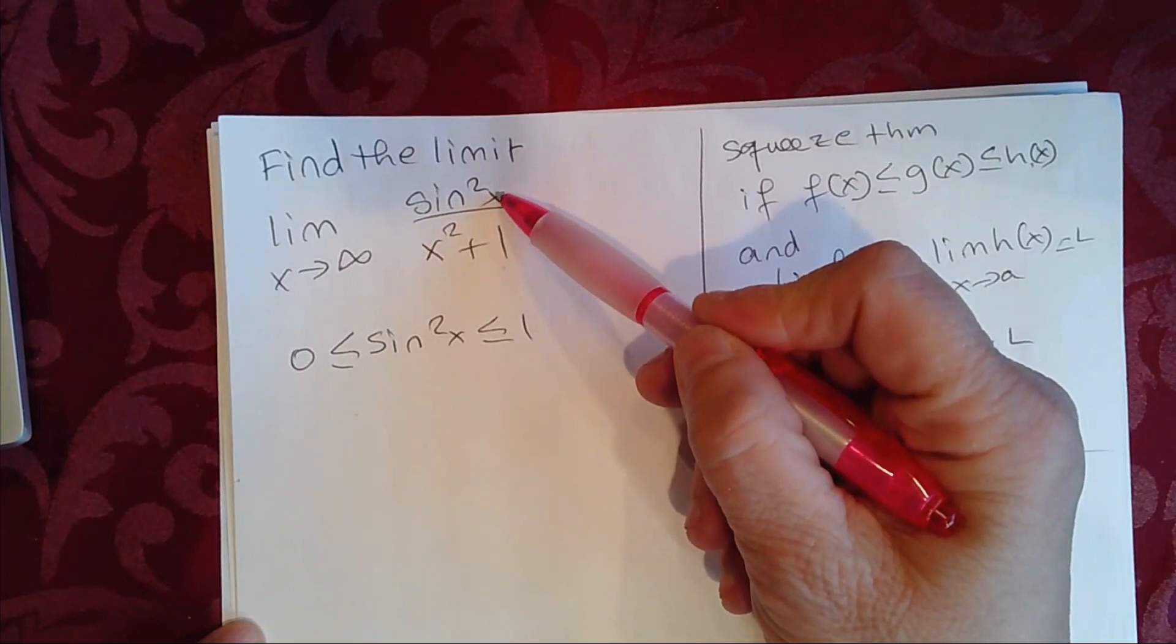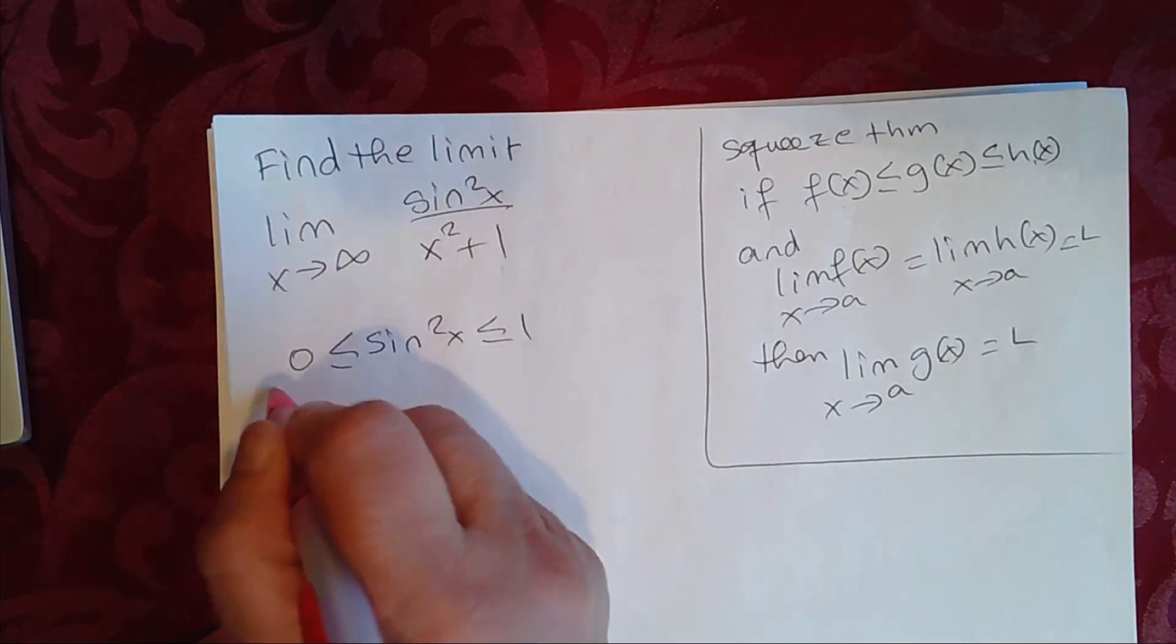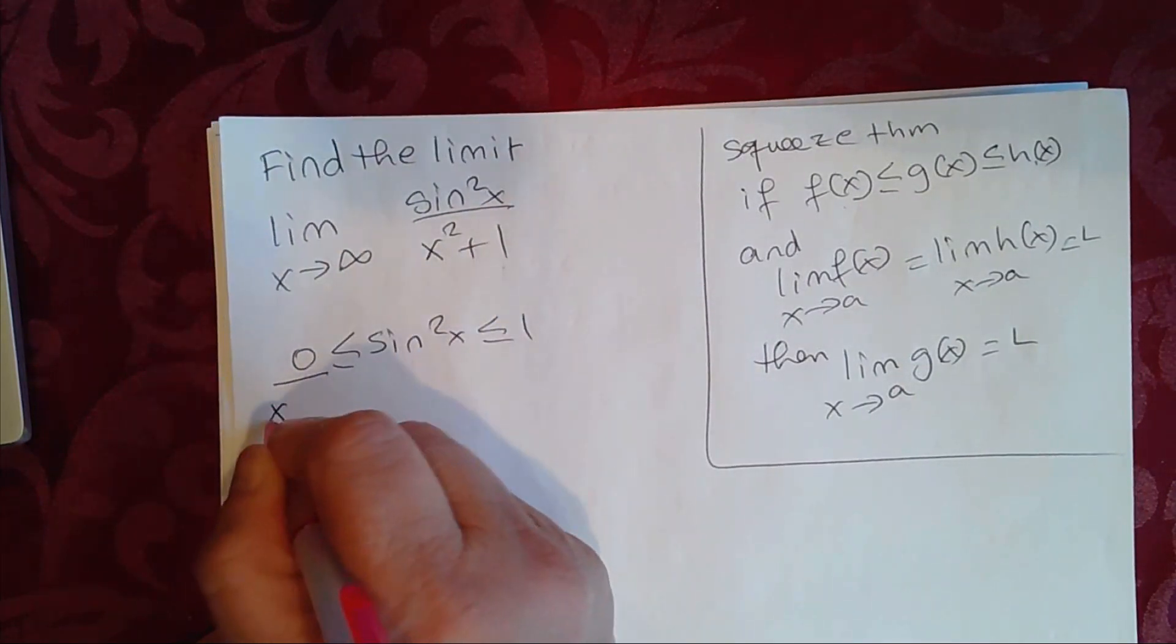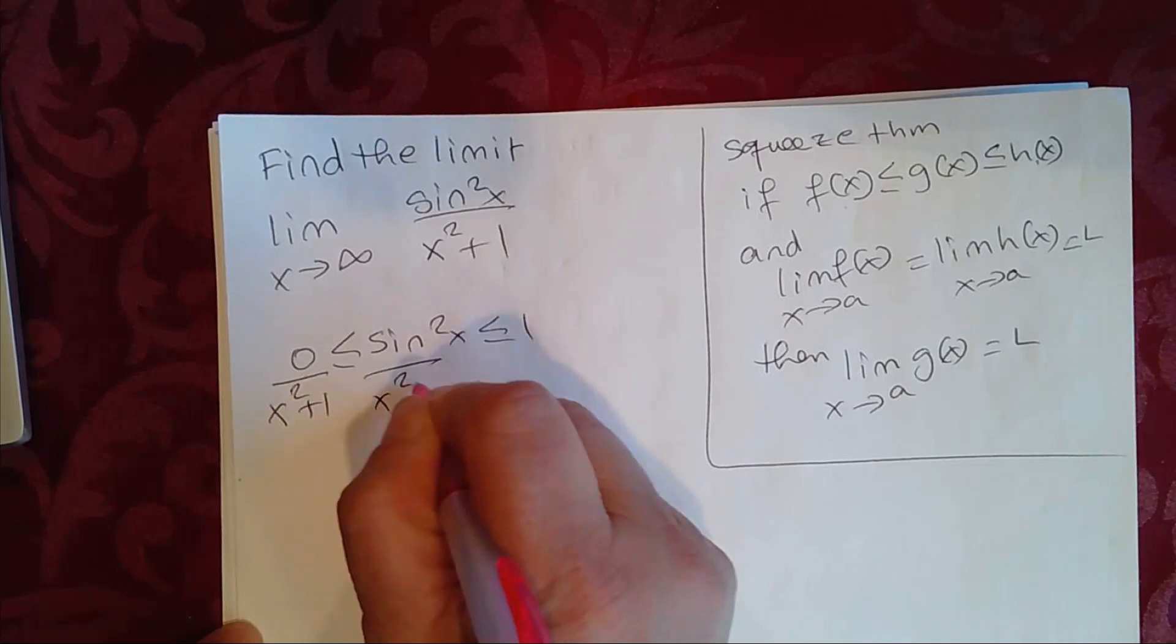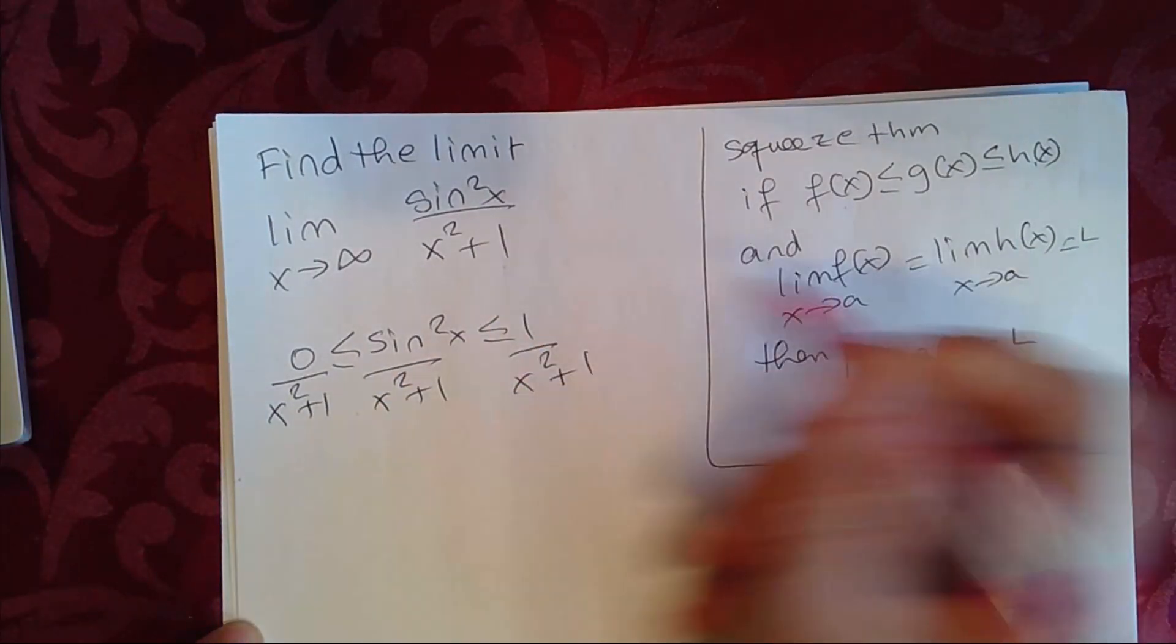Now, if we divide all three sides by the denominator, which is x squared plus 1, x squared plus 1, and x squared plus 1. So this is 0.